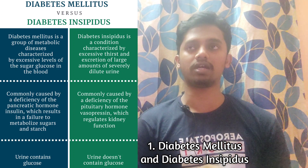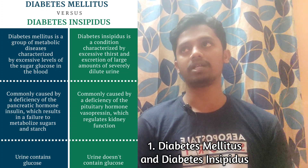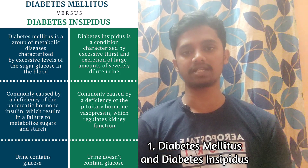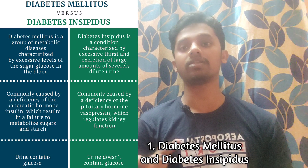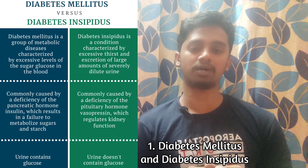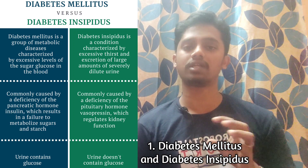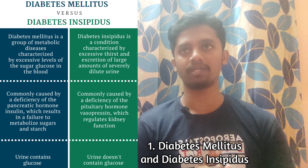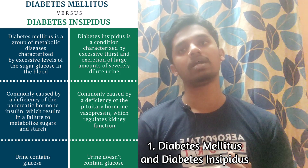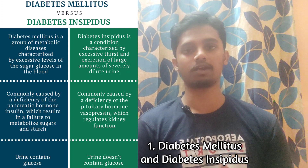Both Diabetes Insipidus and Diabetes Mellitus are metabolic disorders. What is the difference here? In Diabetes Mellitus, the glucose level is affected in the body. There will be an excessive amount of glucose present in the blood — present in circulating blood.